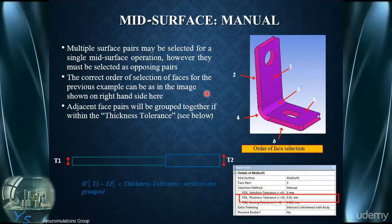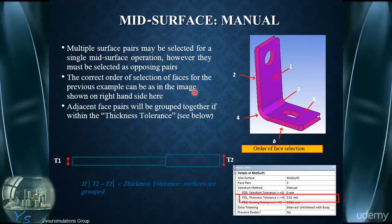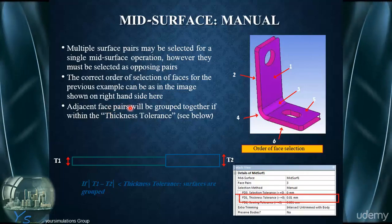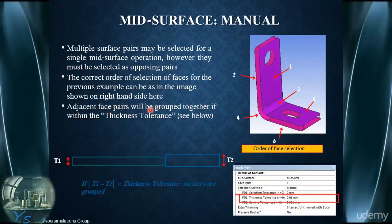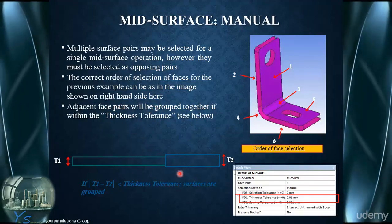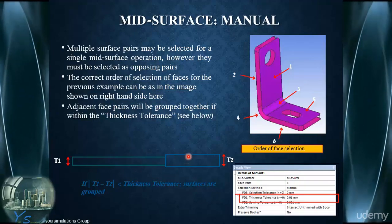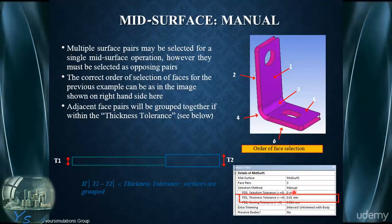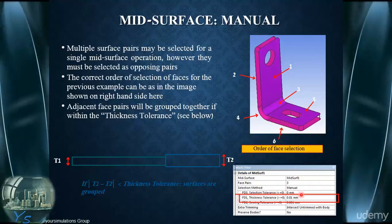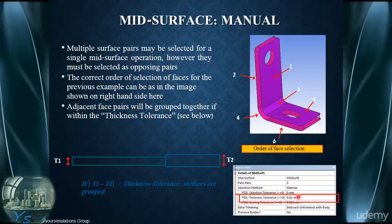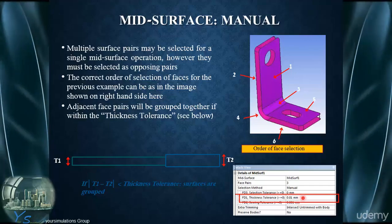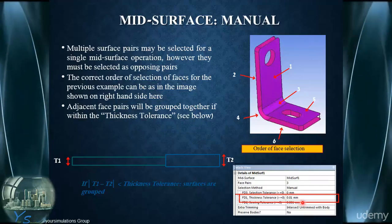The correct order can be as shown in the image on the right-hand side, and adjacent pairs will be grouped together if they fall within the thickness tolerance, as shown at the bottom of the screen. We can edit the tolerances associated with the details of the mid-surfacing, as shown in the fields of the details view for the mid-surfacing operation, visible in the bottom right-hand side of this slide.